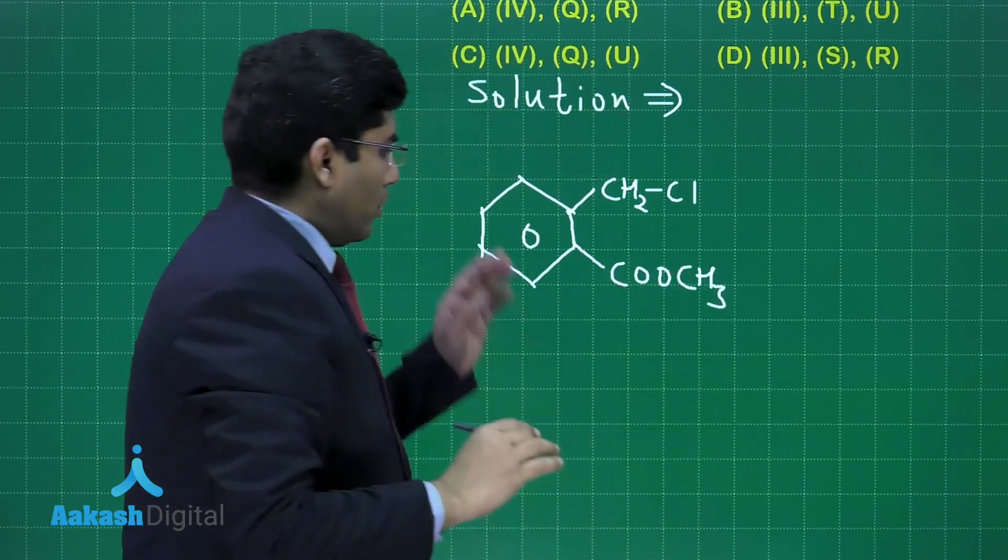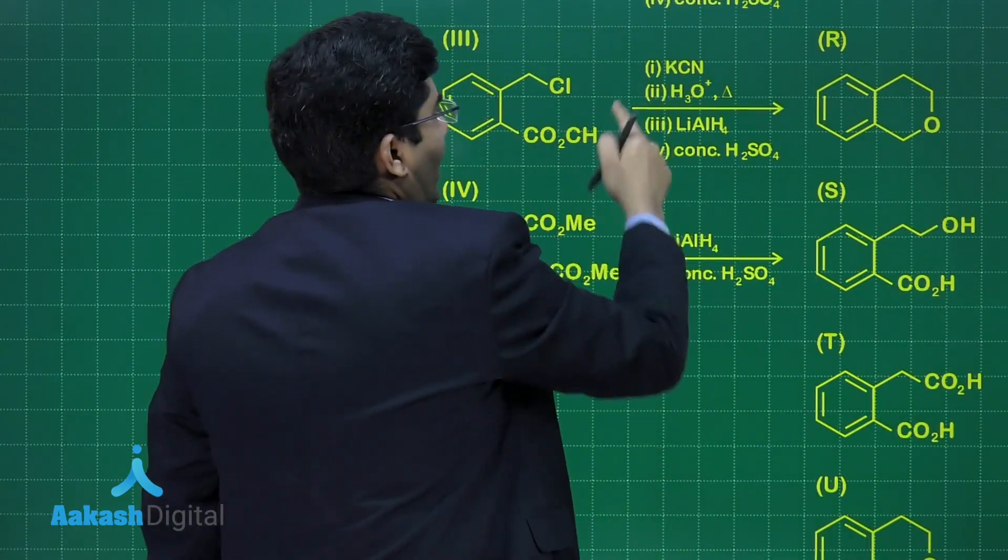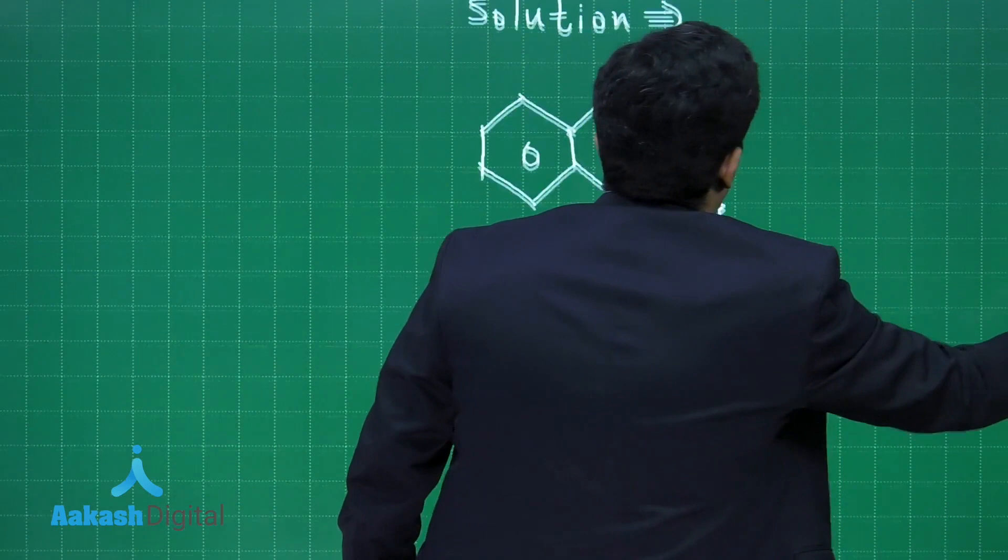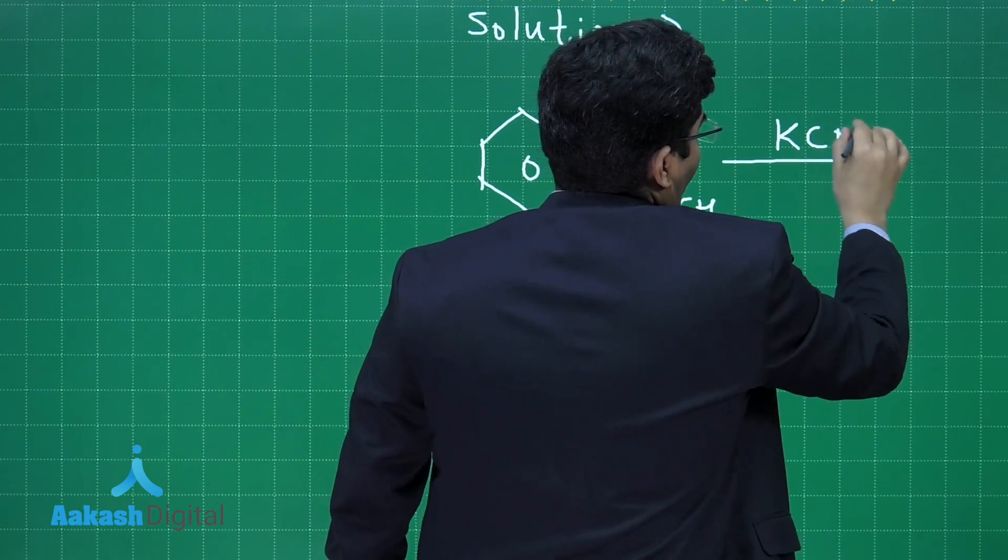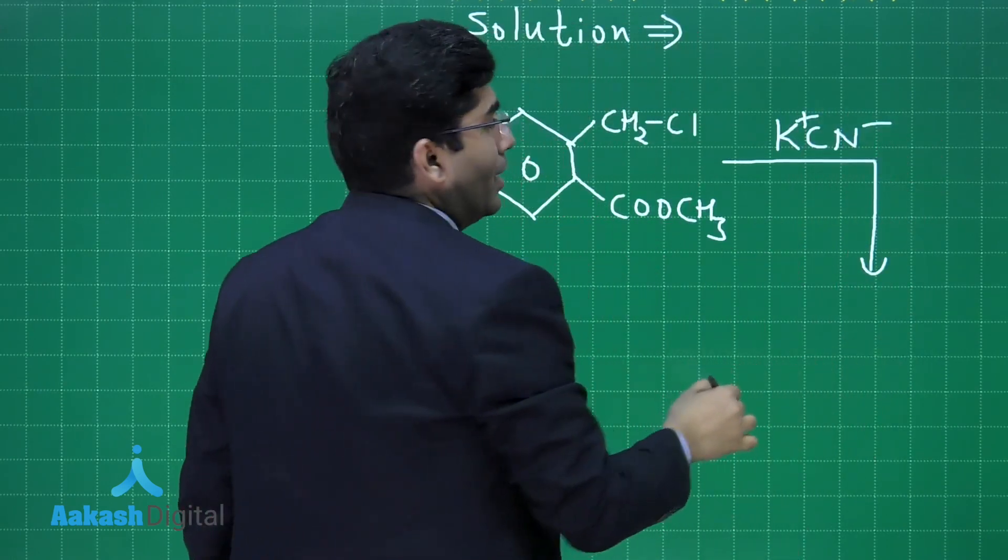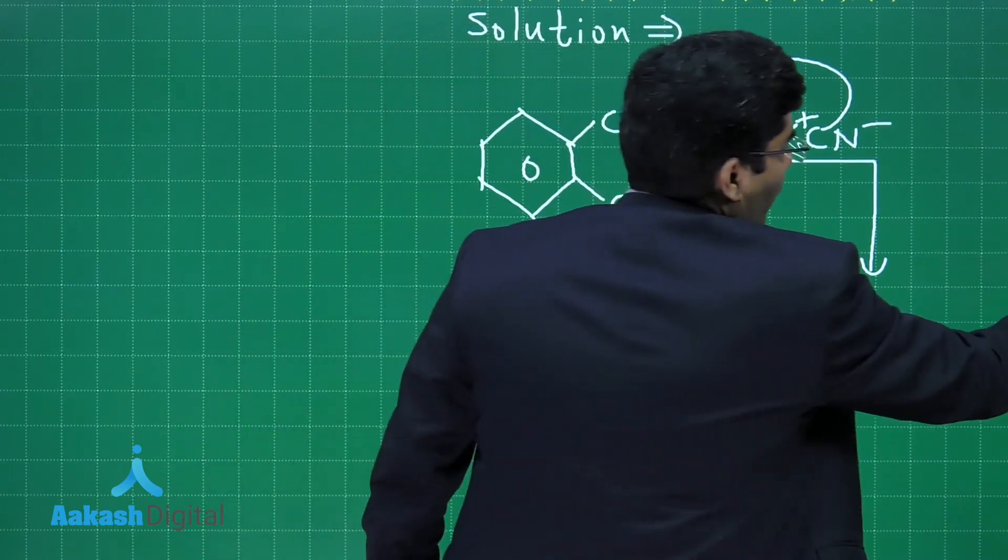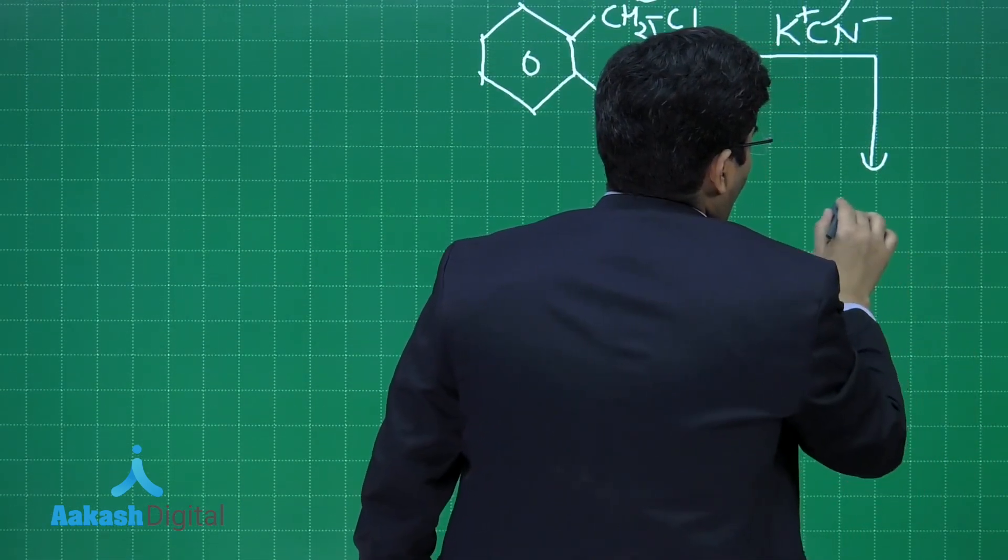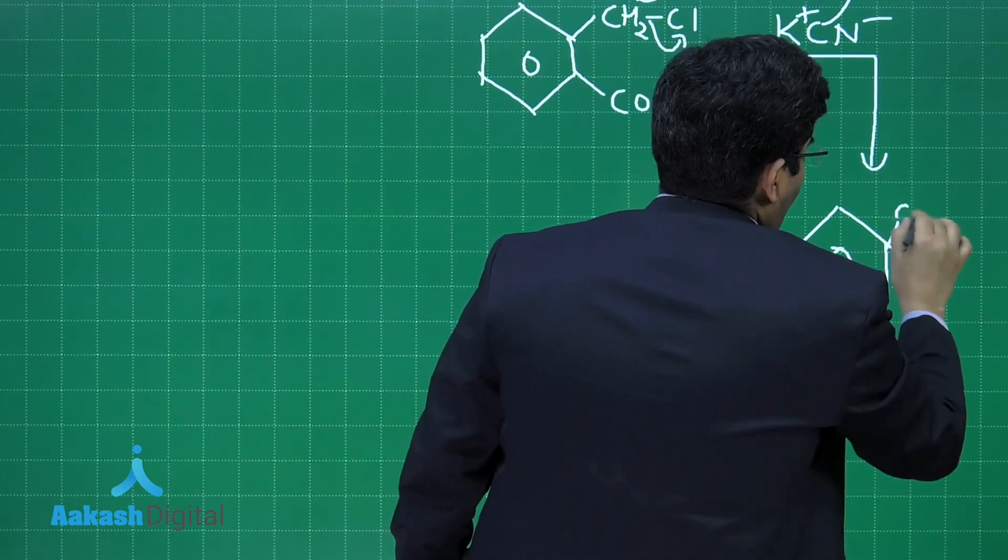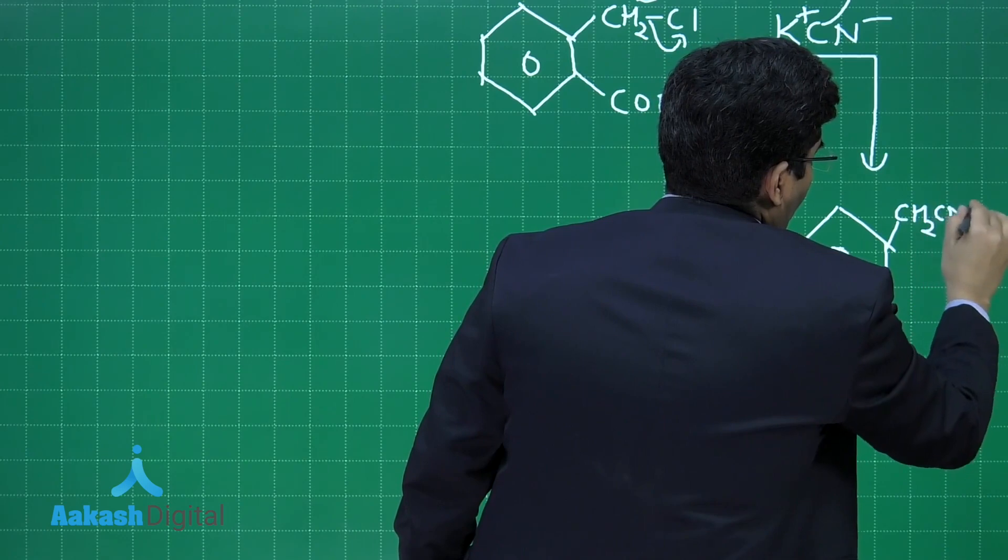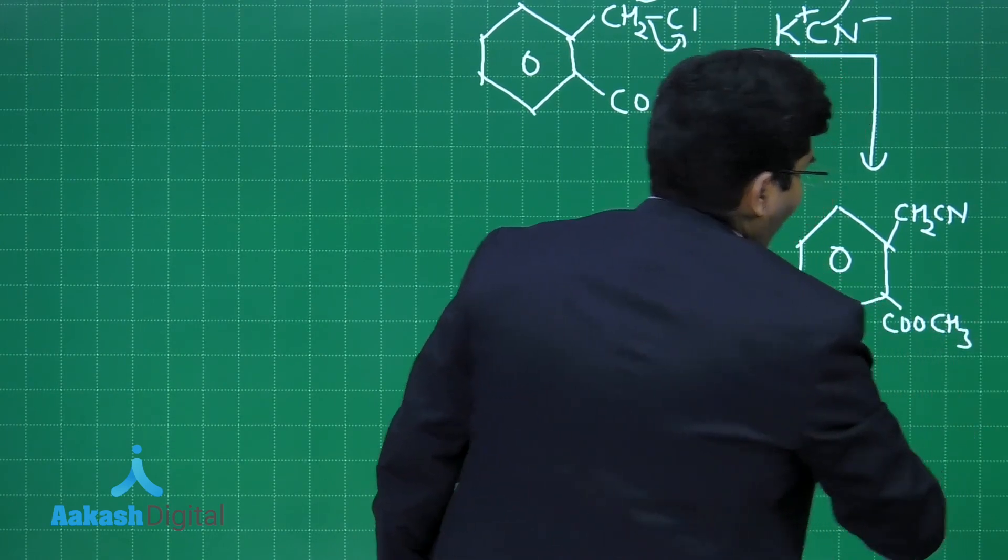After this, he is adding KCN. The nucleophilic substitution reaction will take place. KCN breaks into K plus and CN minus. CN minus will attack here and Cl minus will go out. We will get a product which is CH2CN and nothing will happen to this ester group.